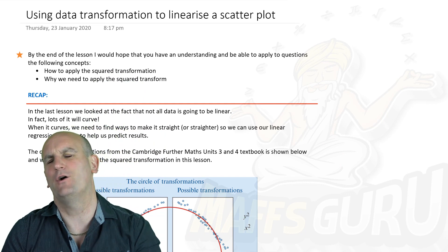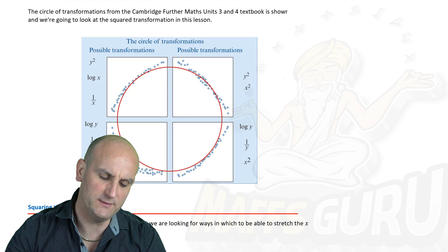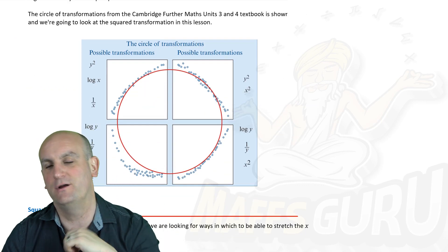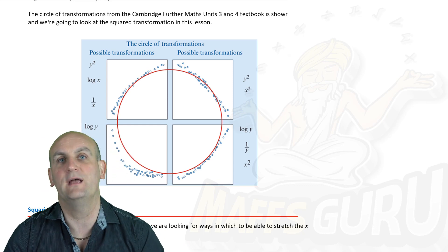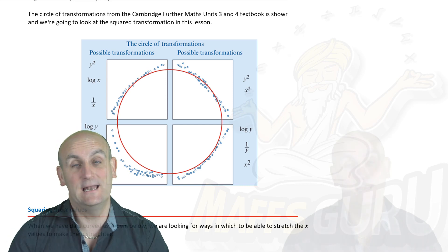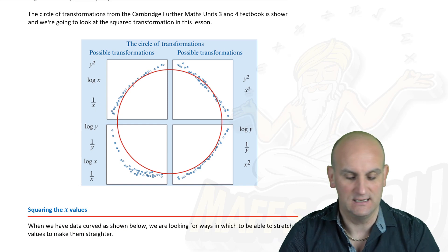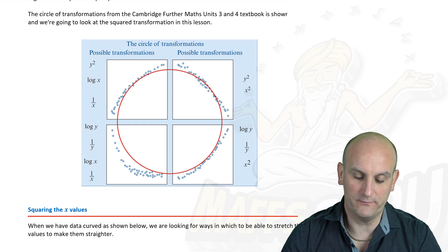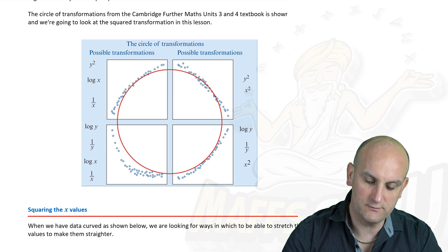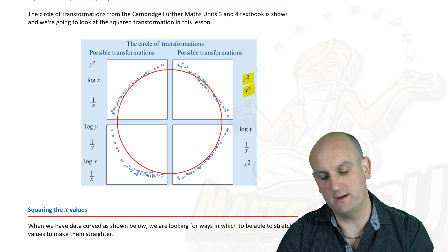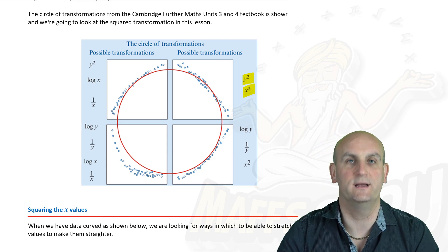This is the second video based on our previous one, which looked at the circle of transformations. Behind me is shown the circle of transformations taken from the Cambridge textbook. As we said in our previous video, not all data is linear, and so we need to find ways of turning curves into straight lines. That is where our circle of transformations comes from.